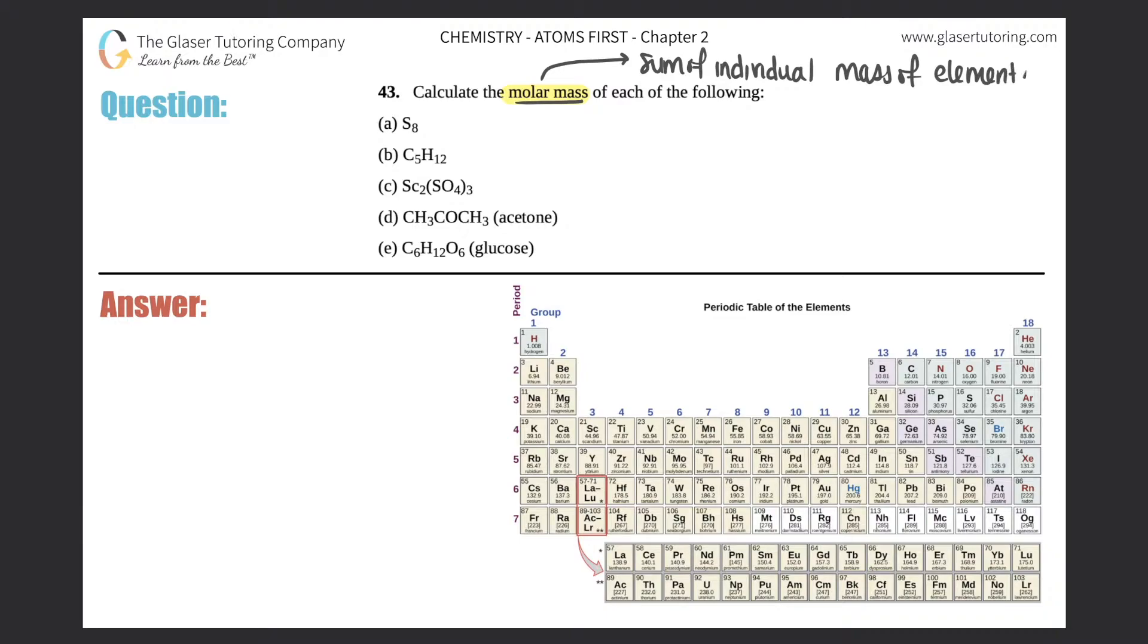Basically we're following, we're just getting the sum of the individual parts and the parts are the elements. Also know that a molar mass is always going to be in units of gram per mole. When we say gram per mole it's always gram per one mole, so one mole of anything will always equal the molar mass in grams.